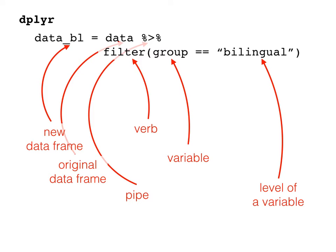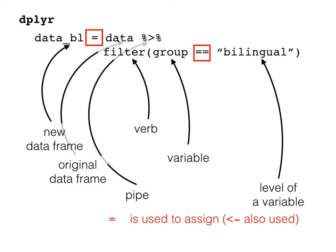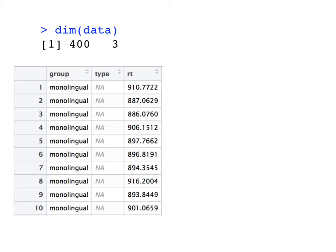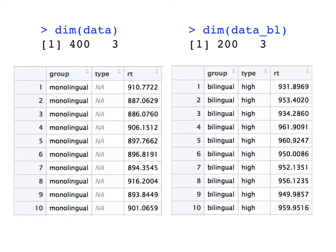There are a couple more things to point out. We use the equal sign at two points. In the first case we're assigning a new data frame called data_bl from our old data frame data. You may have also used the less-than-dash symbol — that's perfectly fine too; I simply prefer the single equal sign because it's one fewer character to type. The second time we use the equal sign is as a marker of relationship — we're saying the value for group must equal bilingual. This is similar to using less than or greater than if group were a continuous variable. At the beginning our data frame had 400 rows and three columns; after the filter call we have 200 rows and three columns, because we've dropped all the monolingual data.